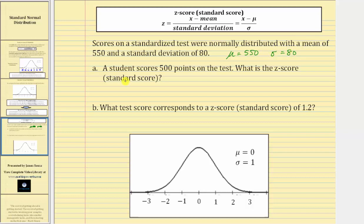For part A, a student scores 500 points on the test. What is the z-score or standard score? Because the test score is 500 points, we also know x is equal to 500. And now I can use the formula above to calculate the z-score. The z-score is equal to x minus μ, which is 500 minus 550, and this difference is divided by the standard deviation, which is 80, which is equal to negative 50 divided by 80, which is negative 5 eighths, or as a decimal, negative 0.625.